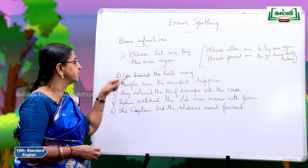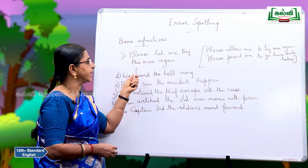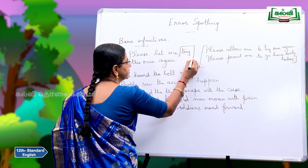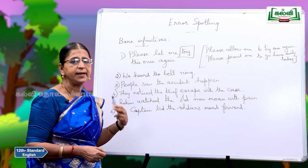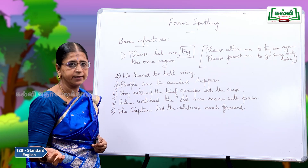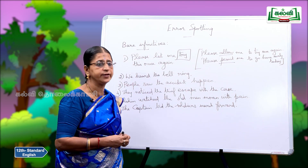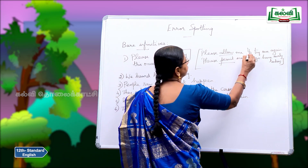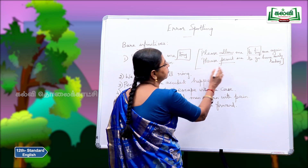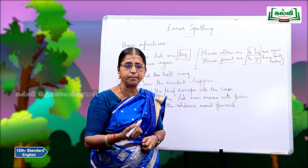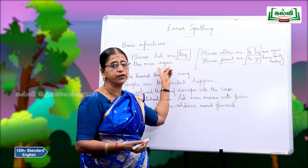While talking about bare infinitives, learn the right use of some more verbs. Please let me try this once again — the bare infinitive is 'try,' not 'to try.' Please let me go. Please let me come in. But when you use 'allow' or 'permit,' then you use only the to-infinitive: Please allow me to try once again. Please permit me to go home early today. Under error spotting, be careful about these two types.